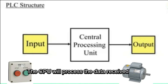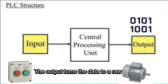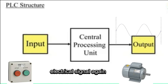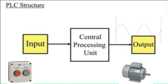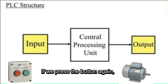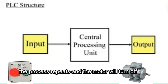The CPU will process the data received and send the result to the output. The output turns the data to a raw electrical signal again and applies that to the motor and turns it on. Now, if we press the button again, the process repeats and the motor will turn off.